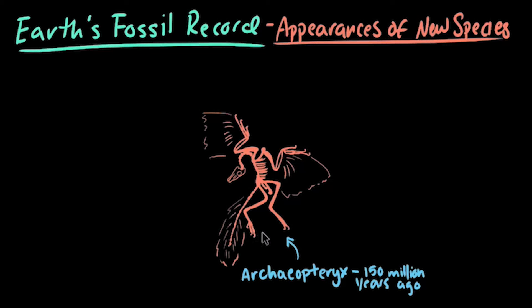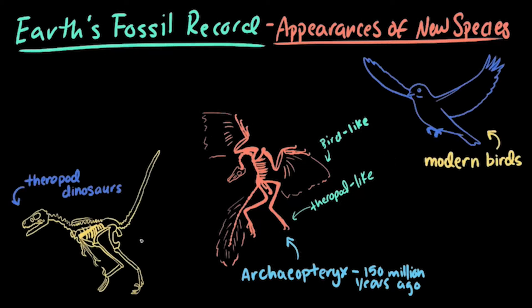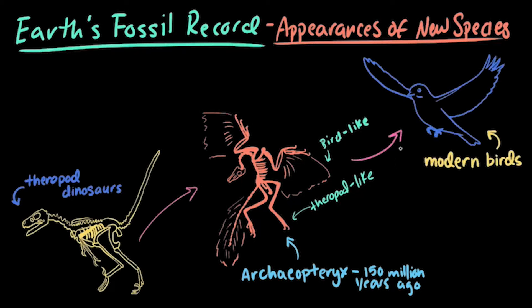This organism in particular is interesting because it had some features unique to theropod dinosaurs, such as jaws and sharp teeth, and some features unique to birds, such as feathers. So, Archaeopteryx represents an evolutionary transition between theropod dinosaurs and birds in the fossil record.